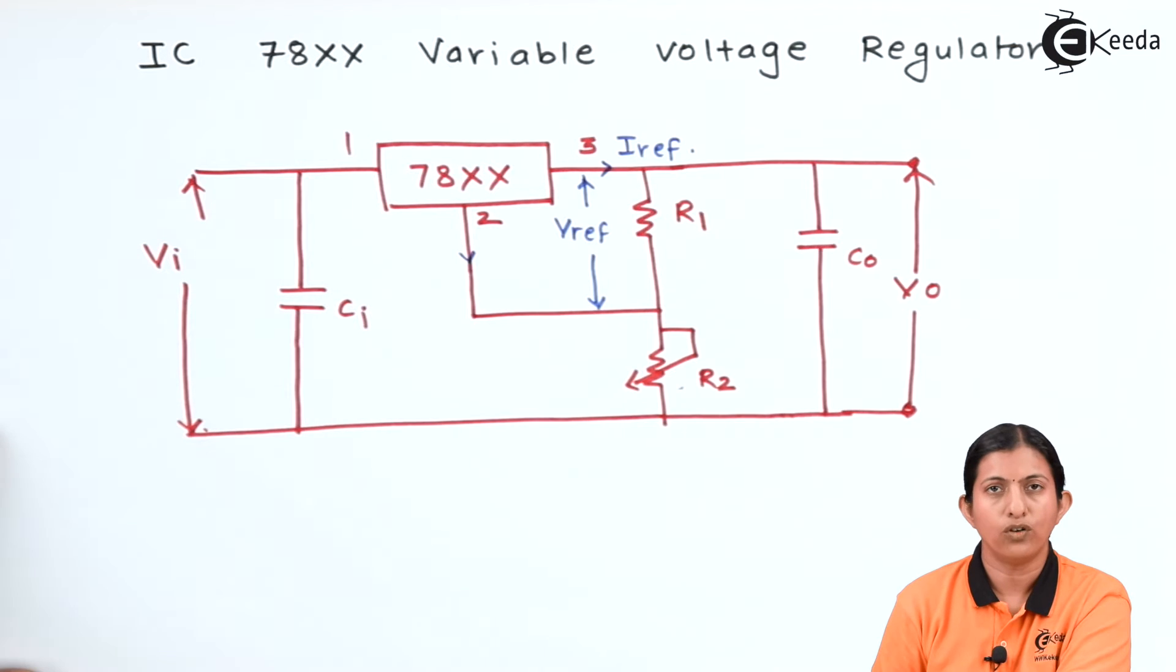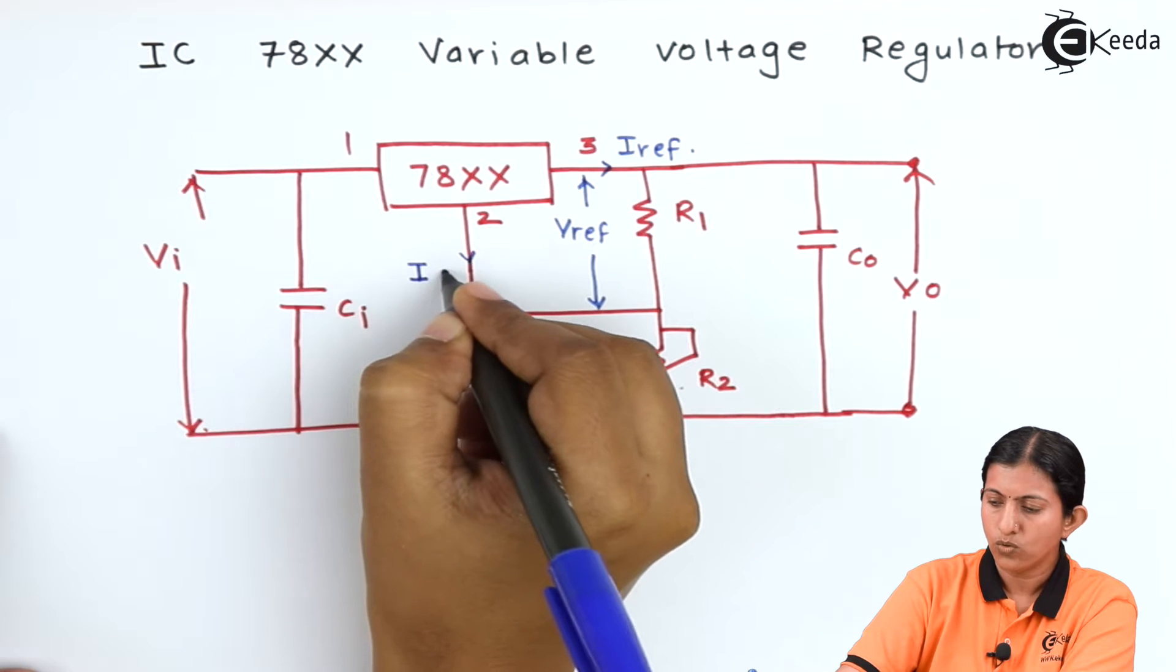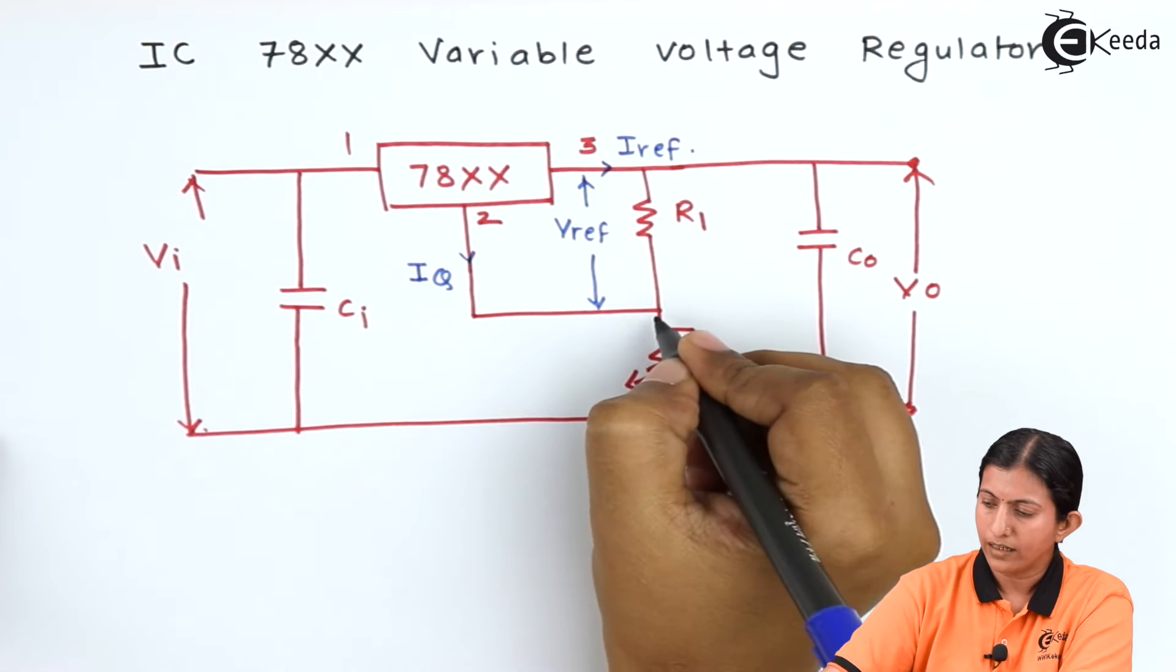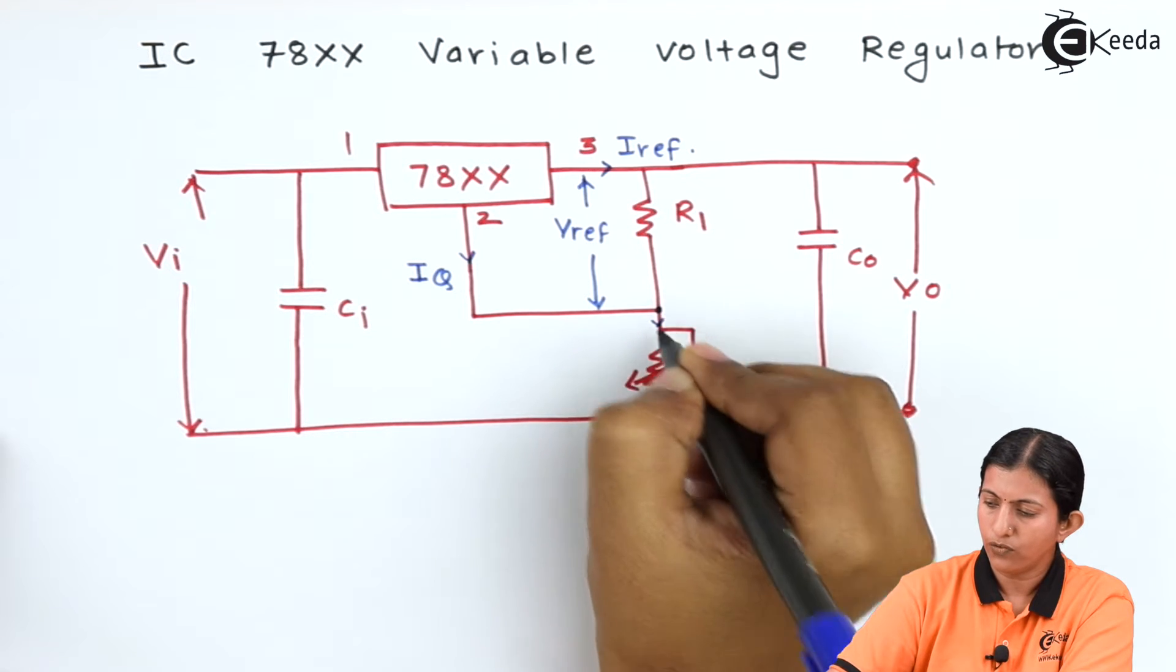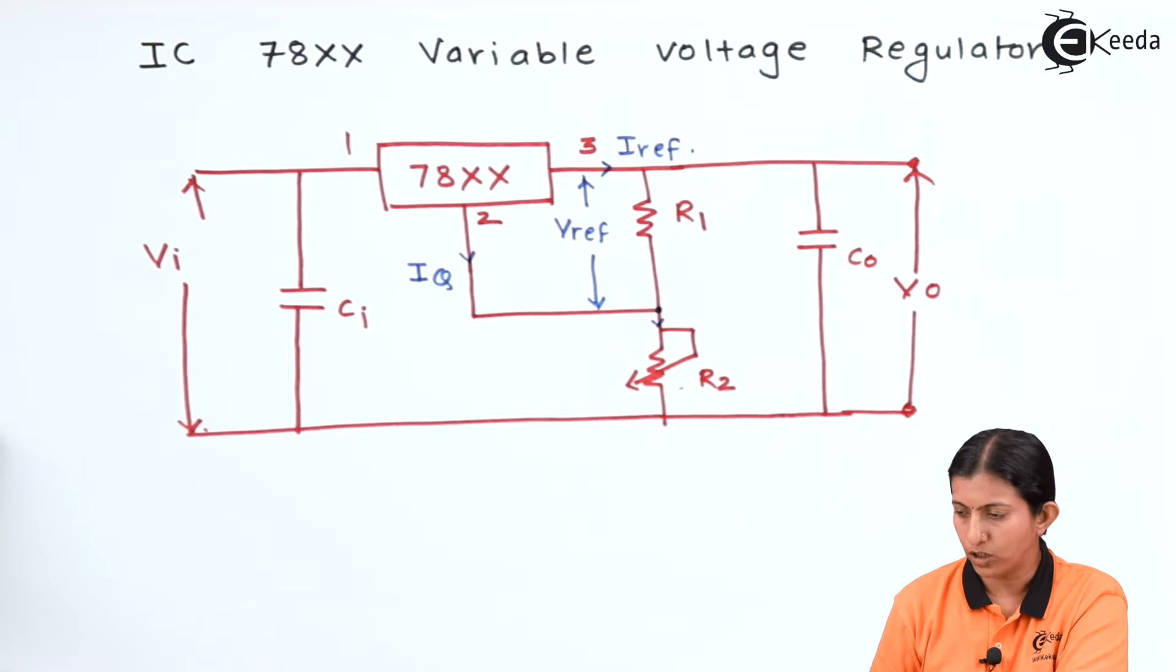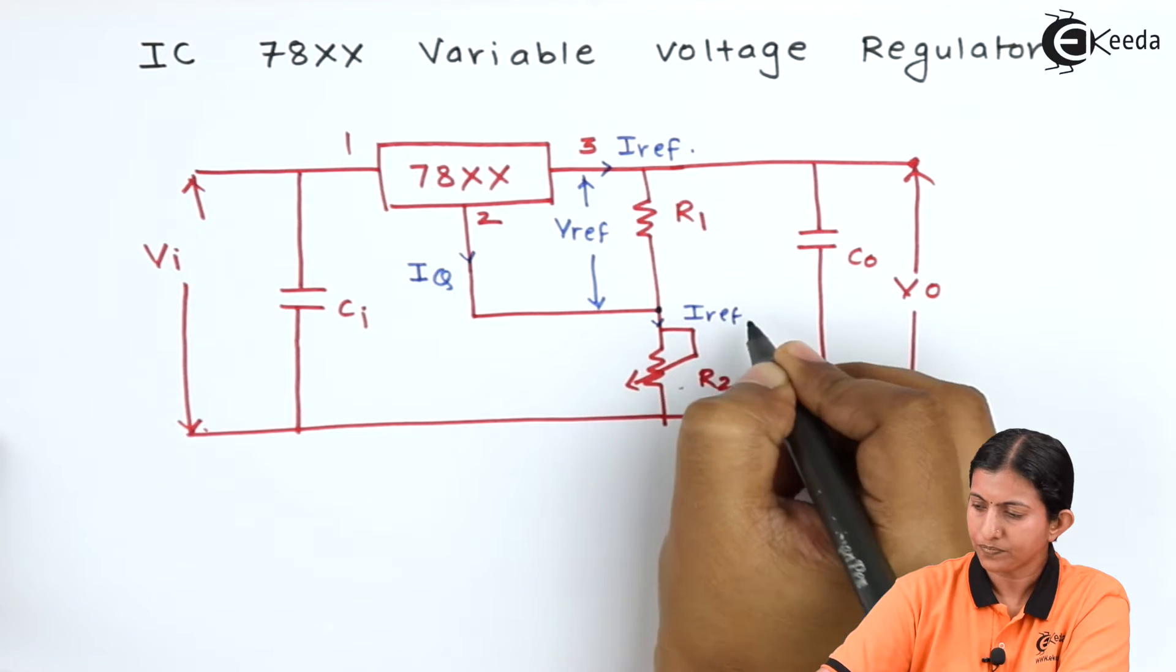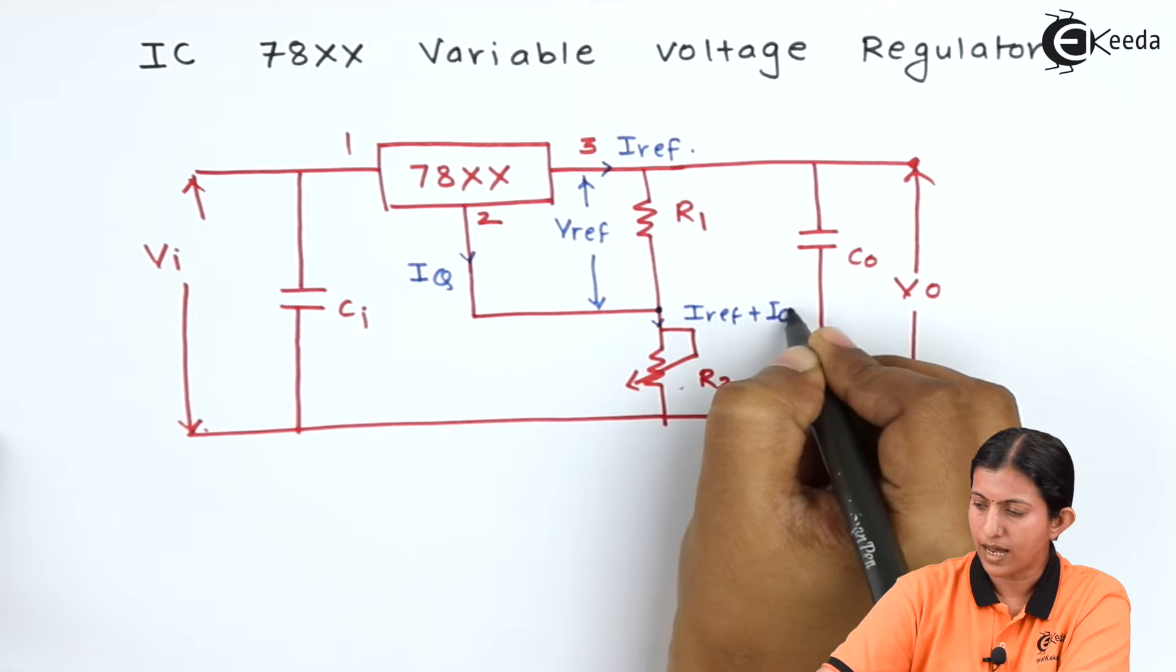The current flowing through pin number 2 is quiescent current whose value is very less and is named Iq. At the point when current flows through resistor R2, it is the addition of I reference plus Iq.